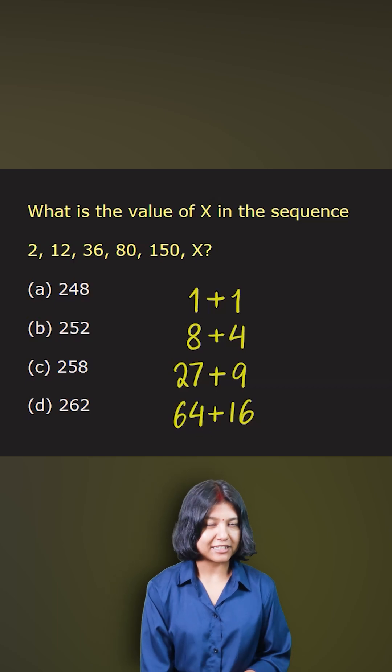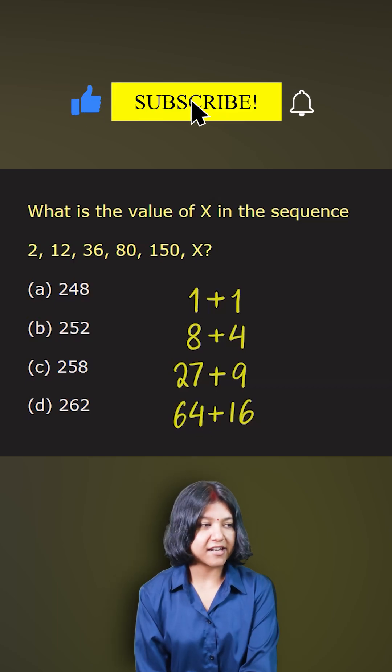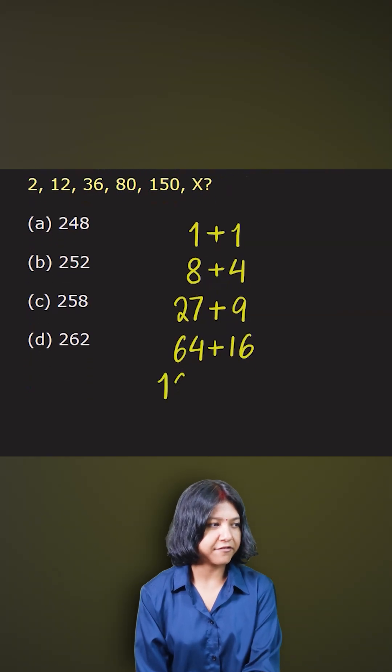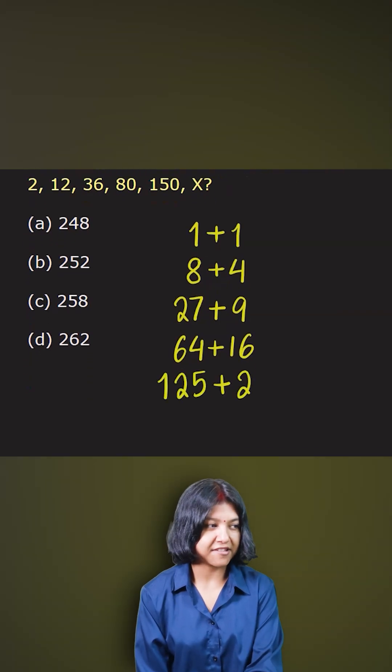The next number has to be the cube of 5 which is 125 and the square of 5 which is 25, so that has given me the sum 150 which is the next number.